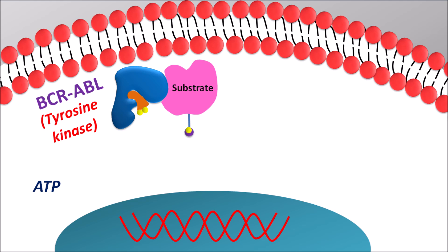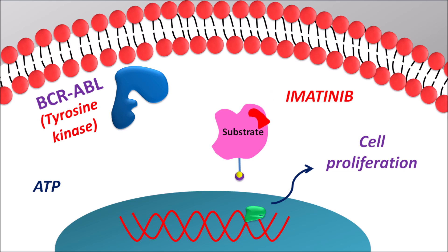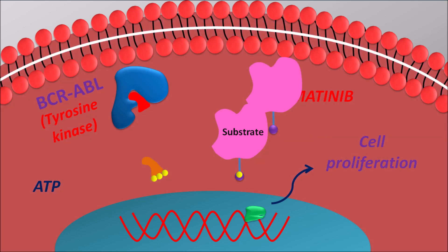When the substrate is phosphorylated, it is activated and interacts with another target. This target interacts with many pathways and finally with DNA, resulting in the release of various mediators responsible for cell proliferation. In Philadelphia chromosome-positive disorder, this tyrosine kinase activity is excessively increased, resulting in uncontrolled cell proliferation. Imatinib can block the ATP binding site on this enzyme, so ATP cannot bind. Even if the substrate binds to the enzyme, it cannot be phosphorylated and cannot activate the cell signaling pathway. In this way, imatinib controls tyrosine kinase-mediated cell signaling.